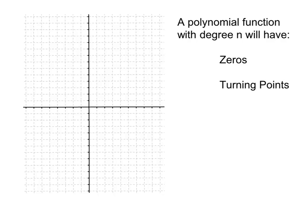If you're given the degree of a polynomial function, we can say some things about the graph of that polynomial function without even having to graph it. Also, if you're given the graph, we can determine, depending on what it looks like, what degree the polynomial function might be. We're going to use these two facts.